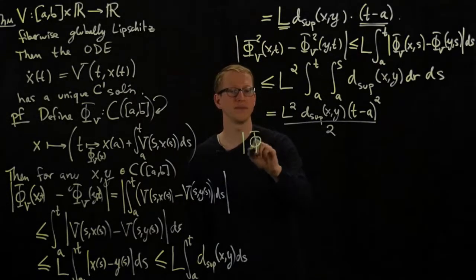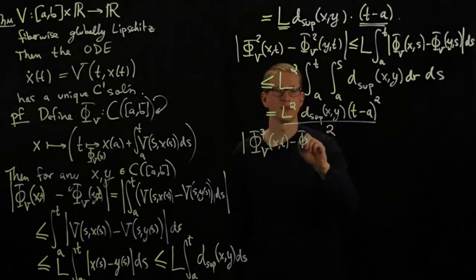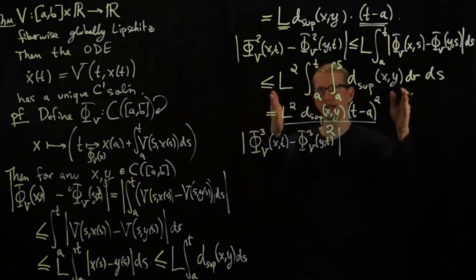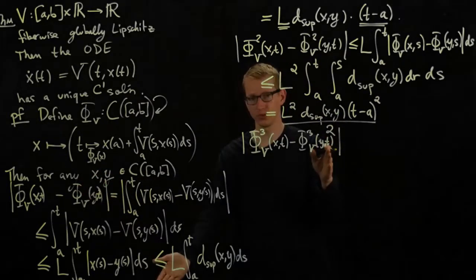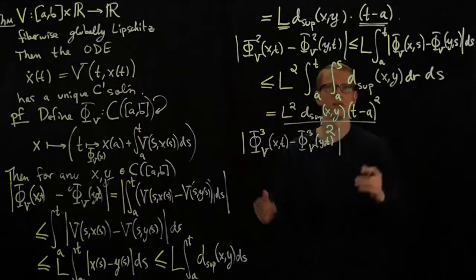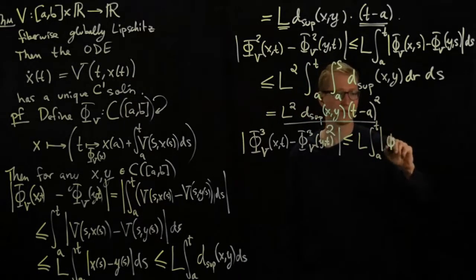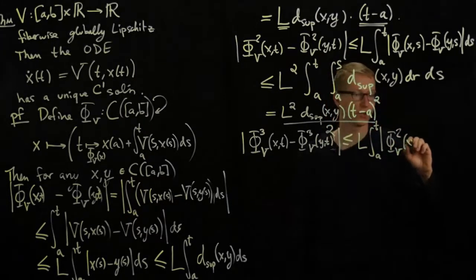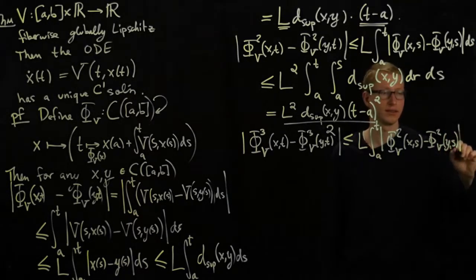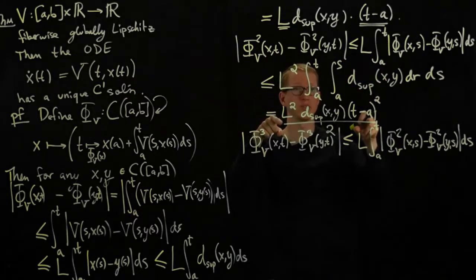So if we do this one more time, let's take the third power, phi v to the third power of x t minus phi v to the third power of y t. Now that we have this at hand, we can take this, apply this procedure to it, and we'll get less than or equals to L with phi squared in here. It doesn't matter which way we do this. It really doesn't. But let me do that method. So it's L integral from A to T phi squared v. And now this time, we have to keep track of our variables. This is x s minus phi squared v y s ds. But this is less than or equal to this expression. Right? That's what we just found.